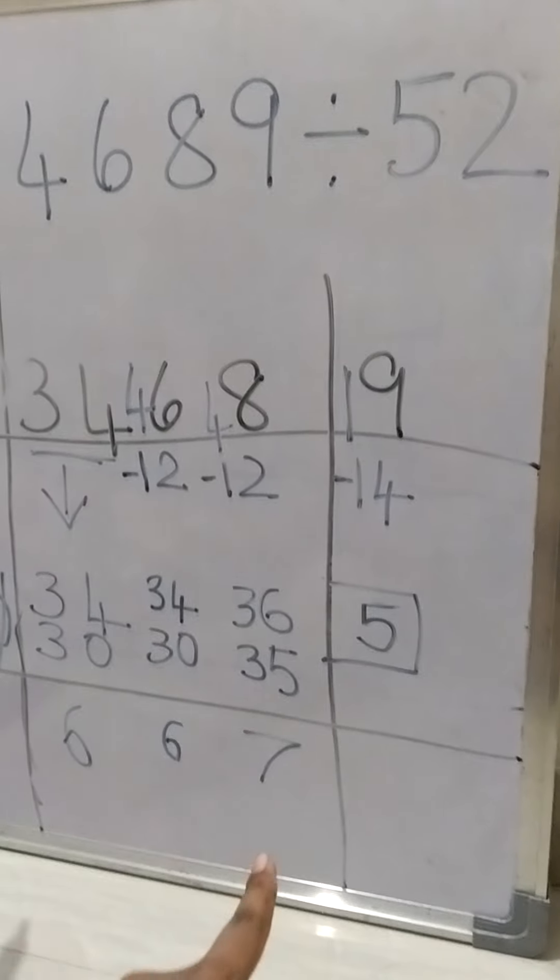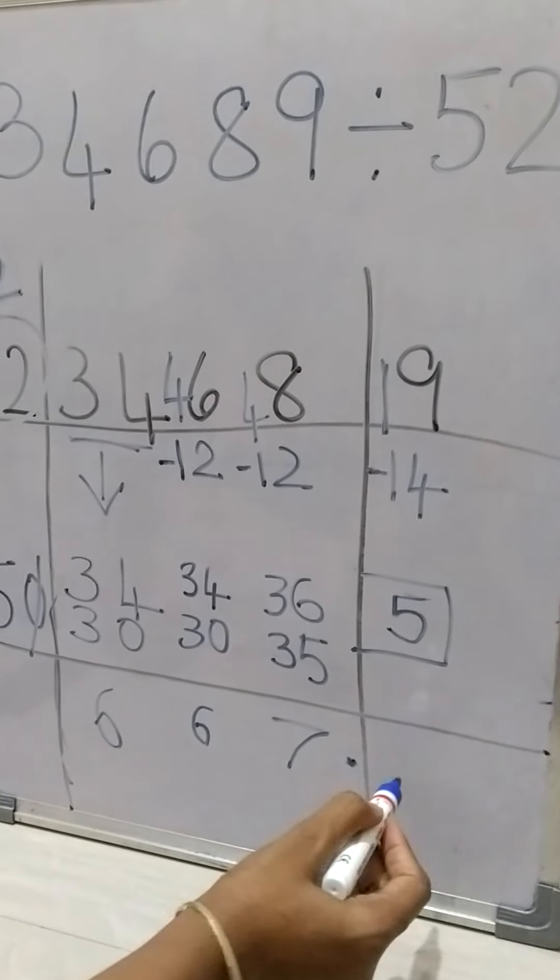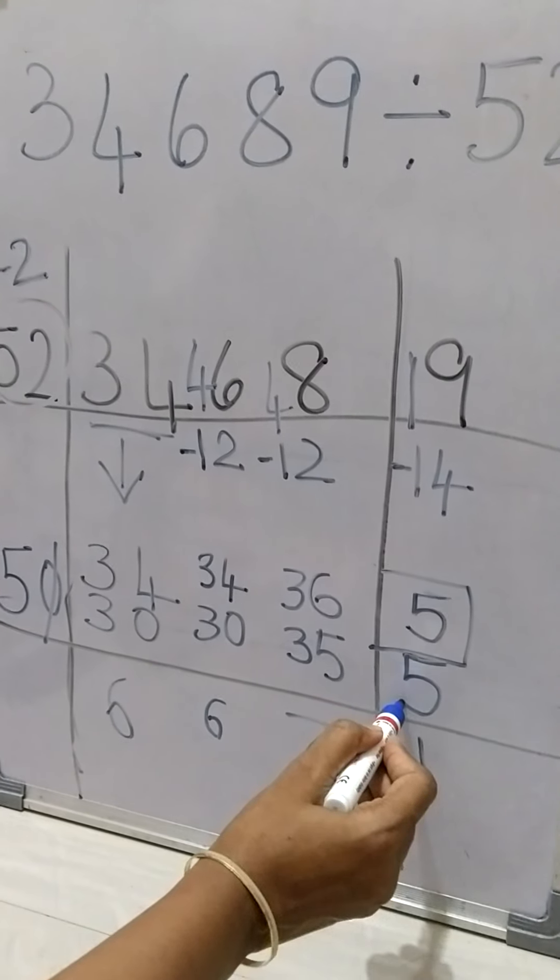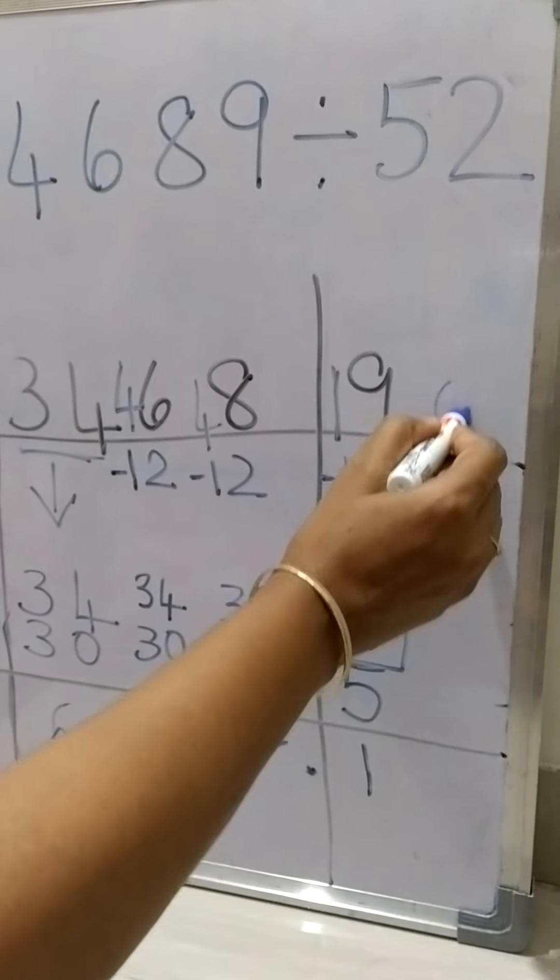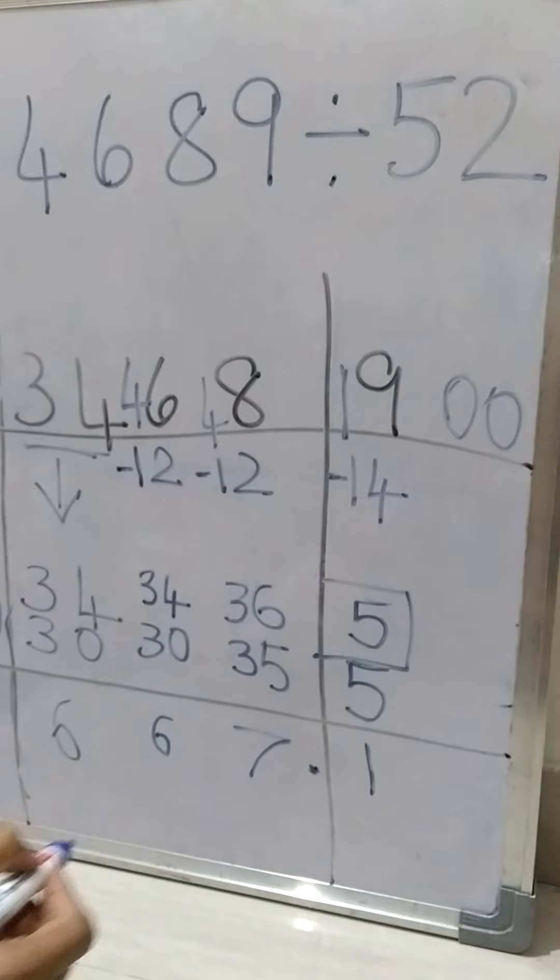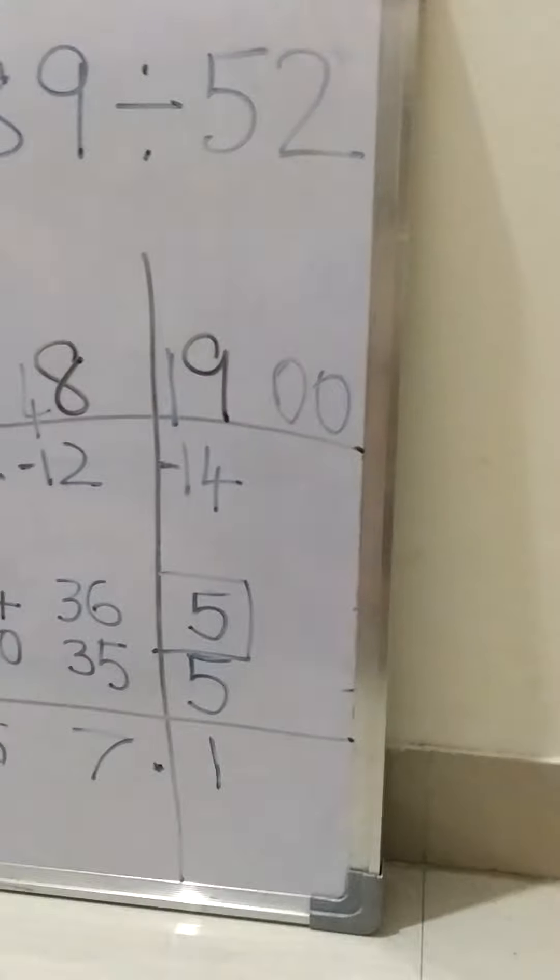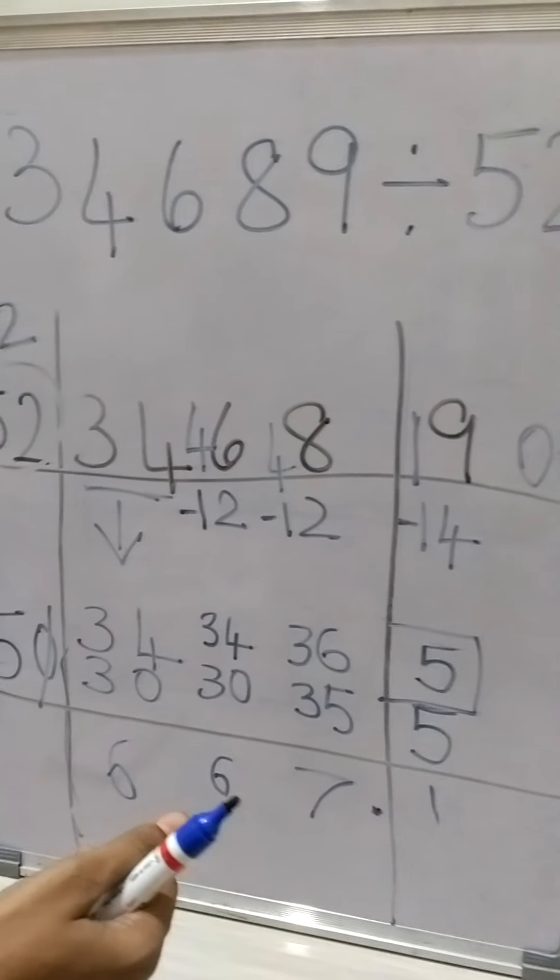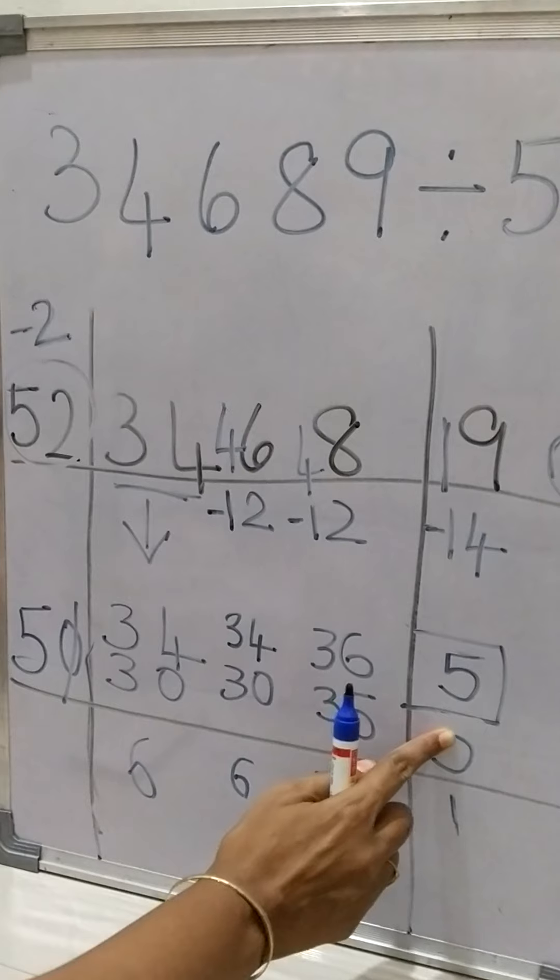5 ones are 5, and 0, 0, so we cannot do anything. So here we got 0, 0, so we cannot go further here. So we are going to take 0, we'll take 1 number backwards.